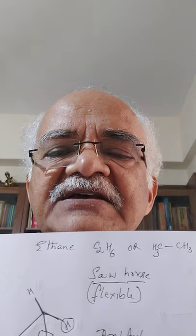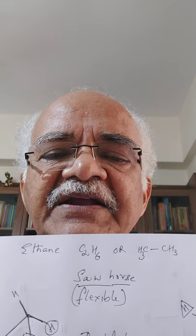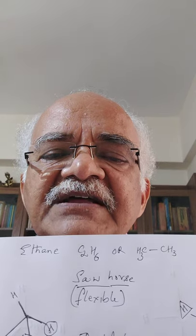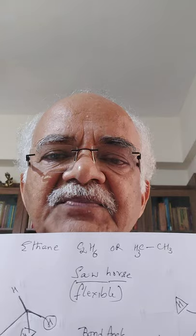Coming to today's program, we shall take the second example: the ethane molecule, C2H6. I can write it as CH3-CH3 or H3C-CH3 because the focus is on the C single bond C. Let us again take the assistance of molecular models to understand the specialty of ethane. The black spheres are carbons, white are hydrogens, and this is the bond between them.